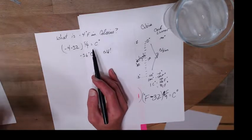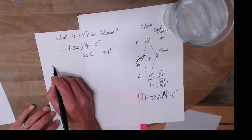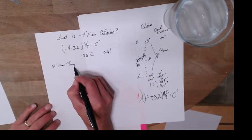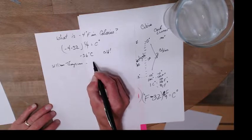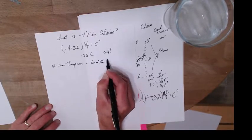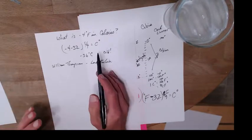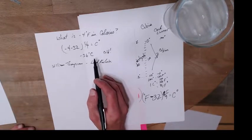So William Thompson, you know him as Lord Kelvin, said this: if energy, if temperature's related to energy, we can't have negative temperatures. It's a terrible idea. So let's come up with a different scale.